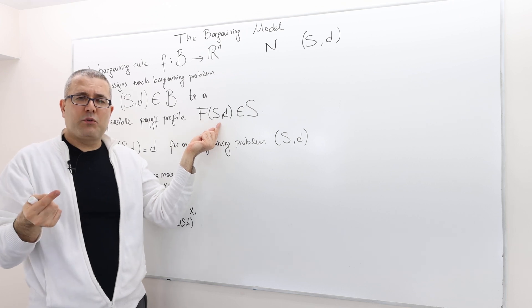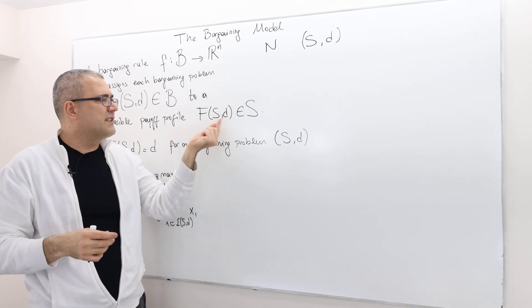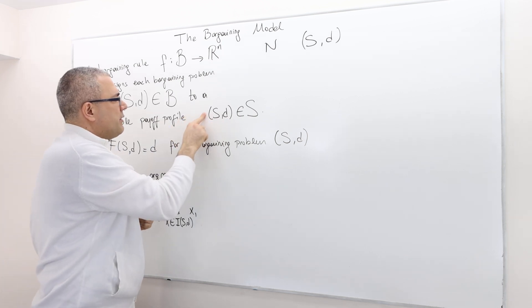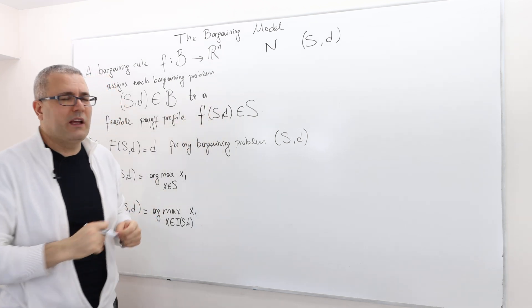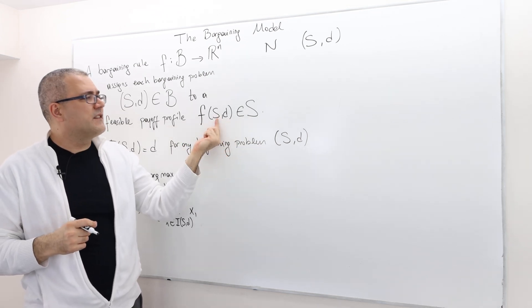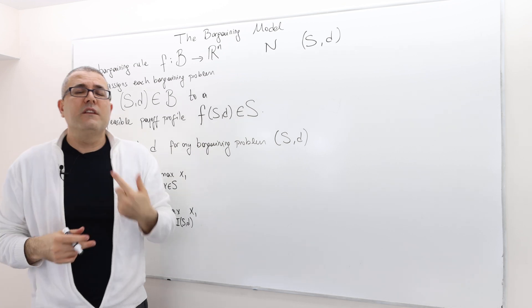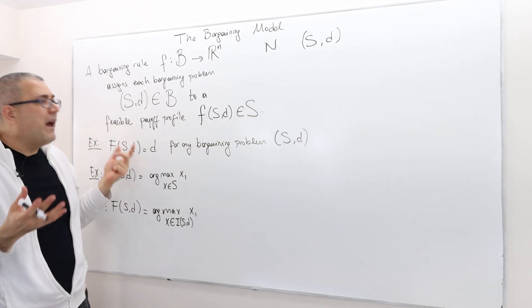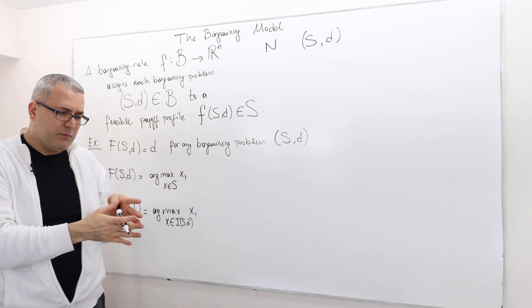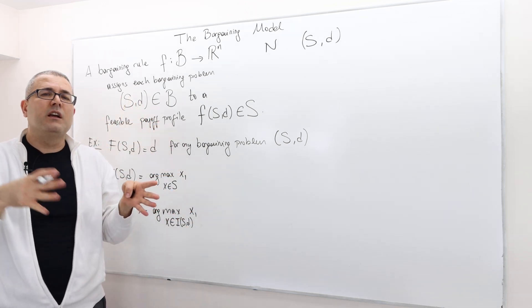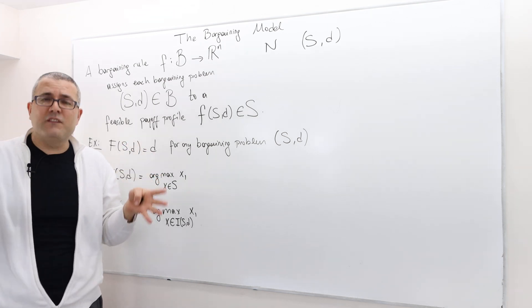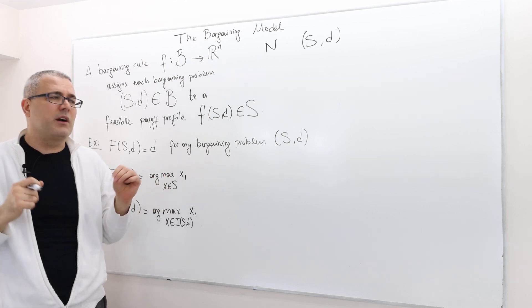But the important thing is it should be mapping to a payoff vector which is feasible for the given bargaining problem. Meaning, if your bargaining problem at hand is S,d, then the bargaining rule f is going to be a vector in the set S. So it's basically mathematically just a function that maps every bargaining problem into a feasible payoff vector.